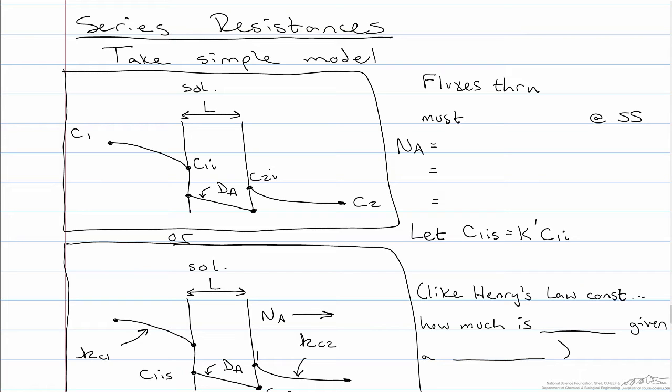Now what we're considering here is that the component may have to diffuse through a boundary layer on the feed side before getting to the membrane surface, and then it may have to diffuse through a boundary layer again on the other side after going through the membrane.